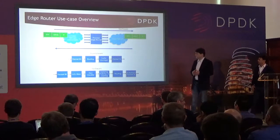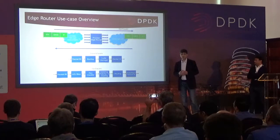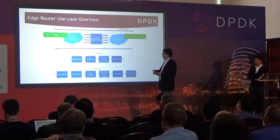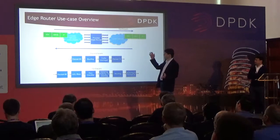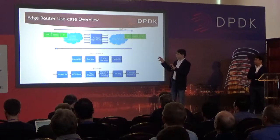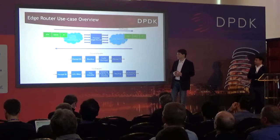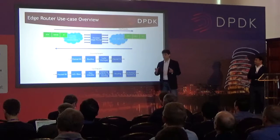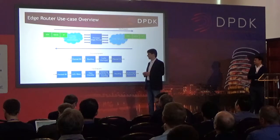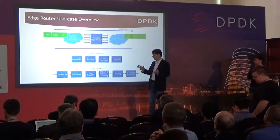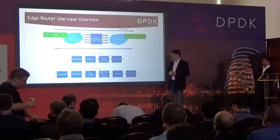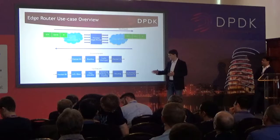An edge router sits between two networks — on one side typically a core network, on the other side an access network. You have two functional pipelines: an upstream pipeline going from customers to the core network, and a downstream pipeline going from the core network back to the access network. On the downstream side: packet reception, routing, traffic management, and packet transmission. On the upstream side: packet reception, ACL filters, flow classification, metering and policing, marking, routing, and packet transmission.